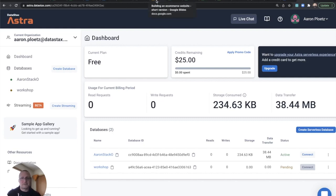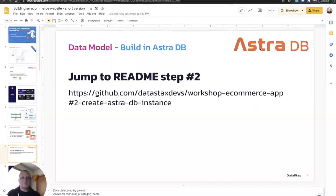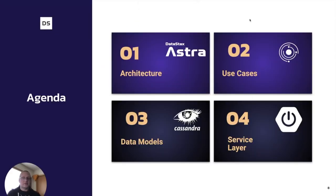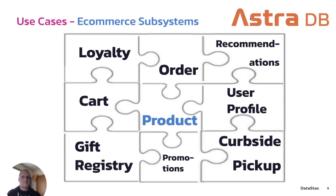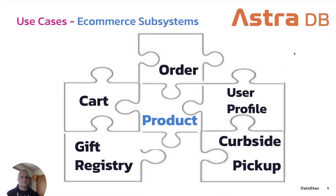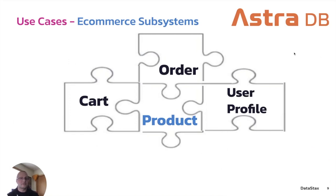While we're waiting for our AstroDB instance to come up, let's talk about use cases. When you're building an e-commerce website, there are many subsystems or components that go into making an entire site, though some are more necessary than others. The four main components we're going to cover in this series are a shopping cart, an ordering system, a user profile, and the product subsystem — which is what we'll be building today.